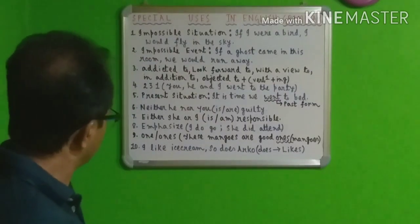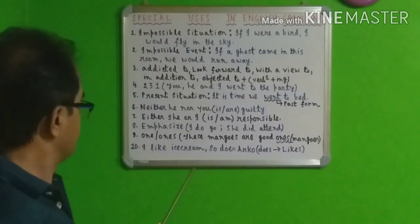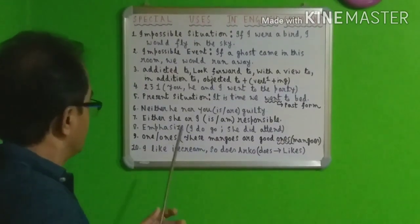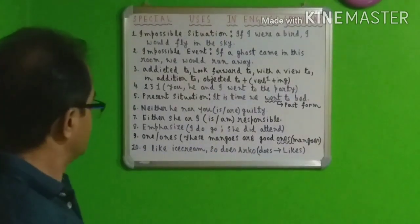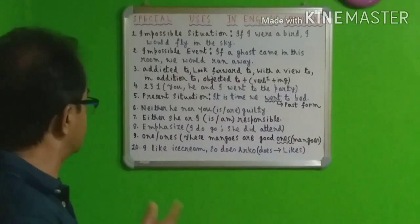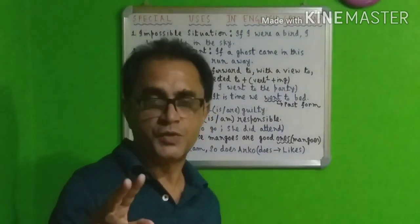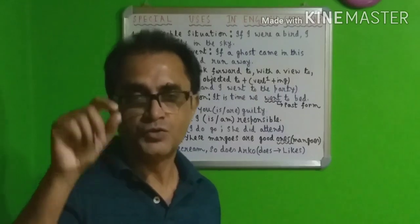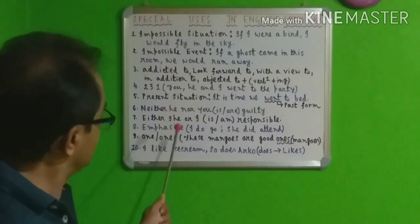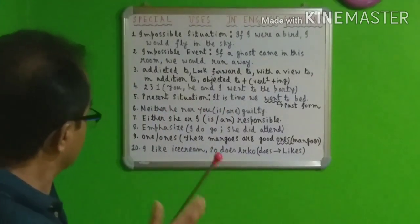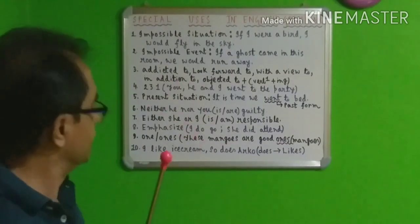Coming to number six. Suppose in a sentence you find 'he' and 'you' as subjects. With 'he' the verb form is 'is,' and with 'you' the form is 'are.' So what verb form should we use? In such a situation — 'neither he nor you' — you follow the second subject and put the verb according to it. So: 'Neither he nor you are guilty.' If reversed: 'Neither you nor he is guilty.'